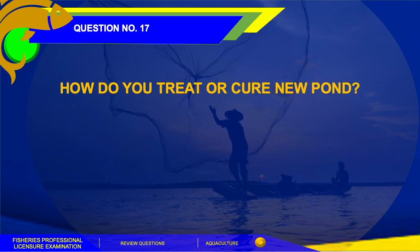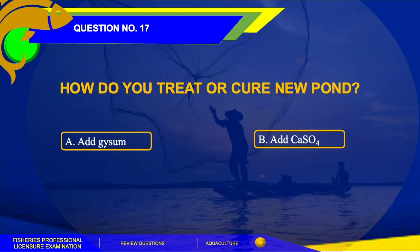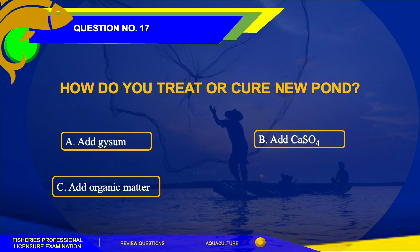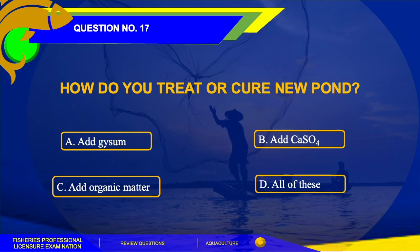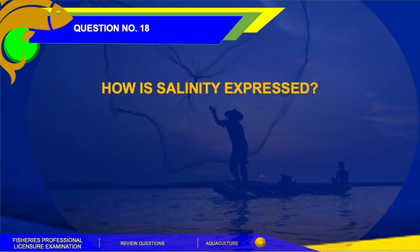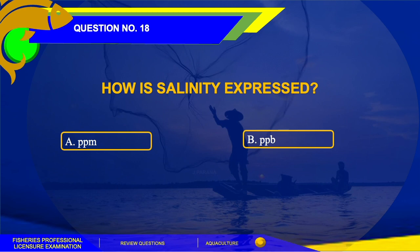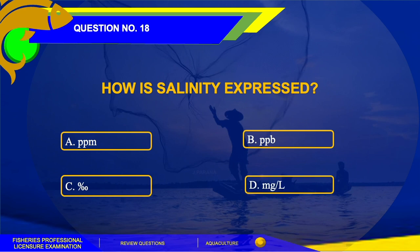Number 17. The answer to the salinity unit question is letter D, milligram per liter. The options are: A. PPM or parts per million, B. PPB or parts per billion, C. per mil, or D. milligram per liter.